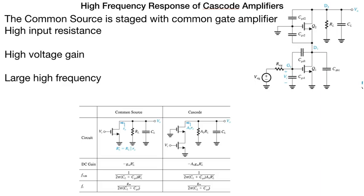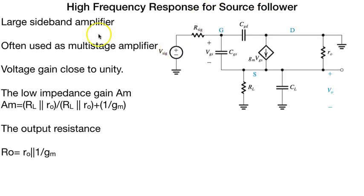The common source stage with common gate amplifier has high input resistance, high voltage gain, and large frequency. For common source, the DC gain is minus Gm into RL′. For cascode, it is minus A0 Gm into RL′. F3dB is 1 over 2π Gm, 1 over 2π CL plus Cgd into RL′ for common source, and 1 over 2π CL plus Cgd A0 into RL′ for cascode. ft equals Gm over 2π CL plus Cgd.